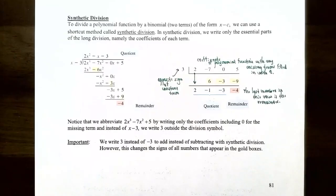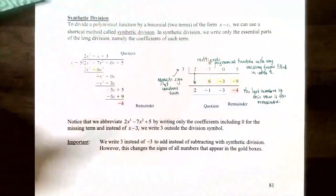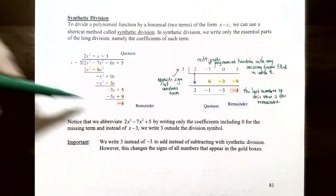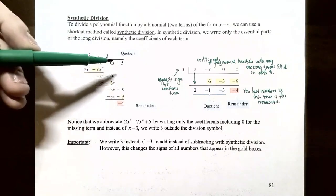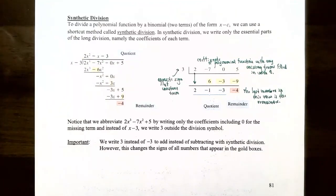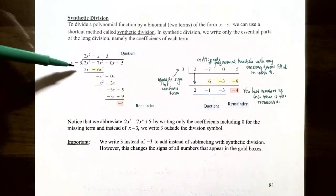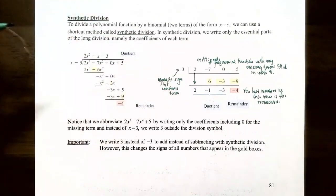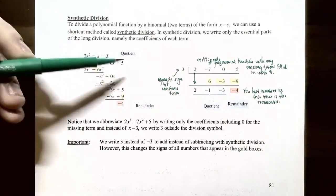Long division of polynomial functions is one way to divide two polynomial functions. Here's a different way called synthetic division. To divide a polynomial function by a binomial of the form x - c, we can use a shortcut called synthetic division, where we write only the essential parts — just the coefficients. For example, 2x³ - 7x² + 0x + 5 divided by x - 3: the coefficients 2, -7, 0, and 5 go inside the bar, and 3 goes outside.